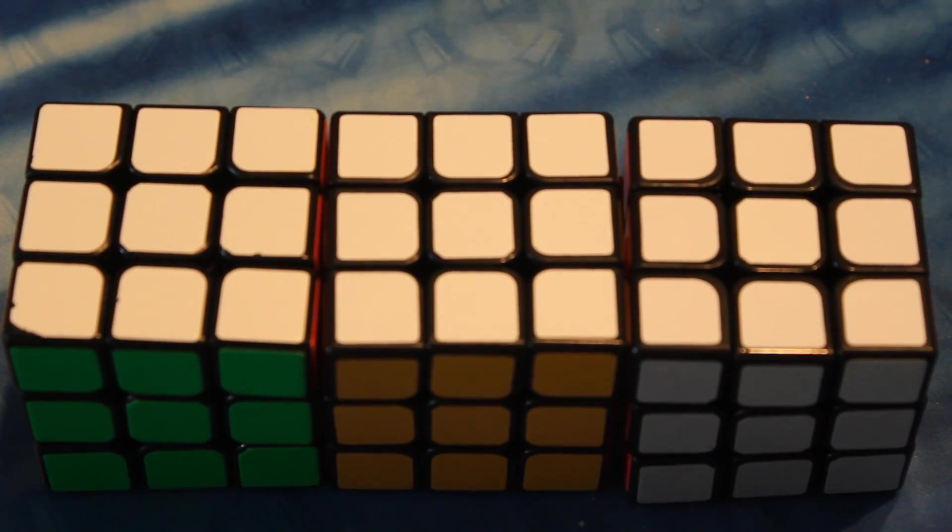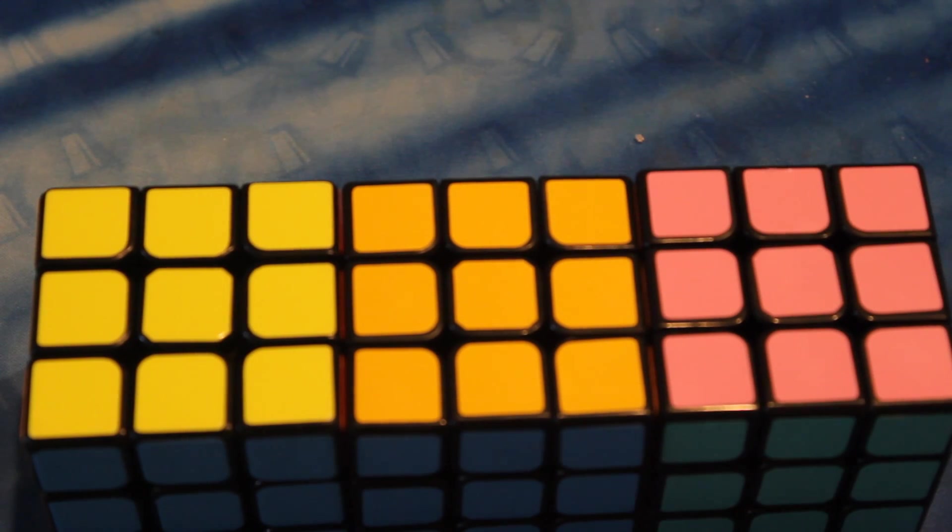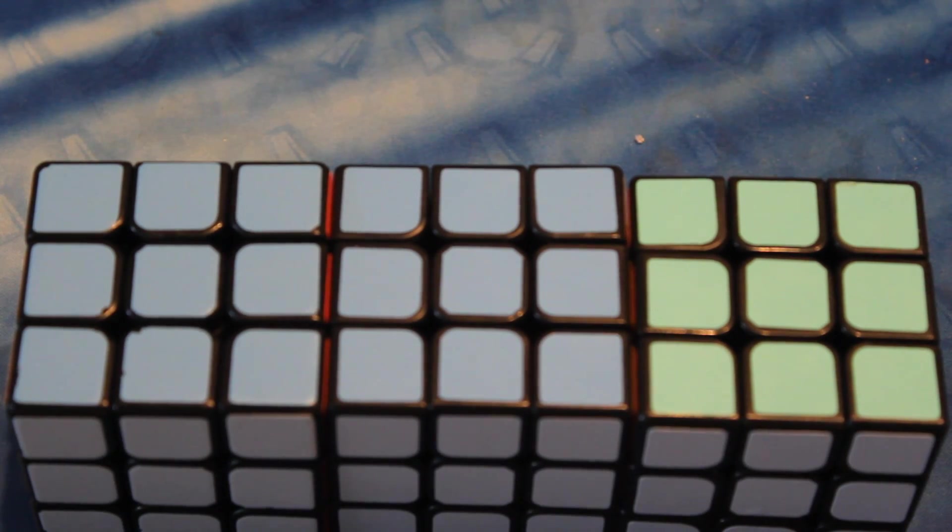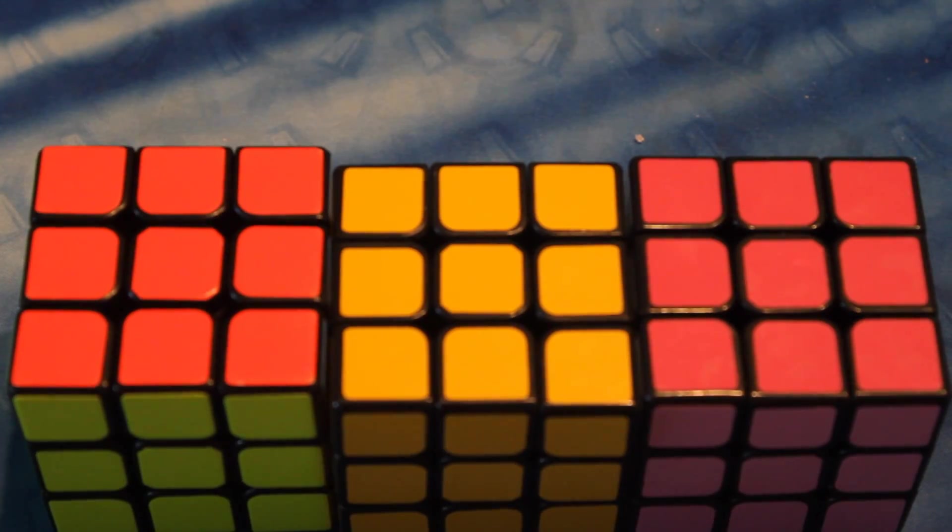This is what they all look like together. These are all the whites. What it would look like to see green, what it would look like to see yellow, what it would look like to see blue, what it would look like to see orange, and what it would look like to see red.